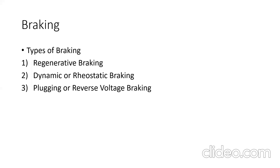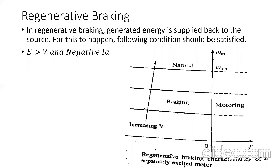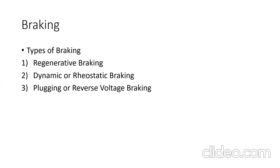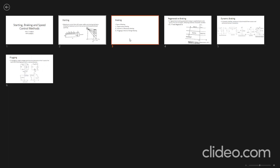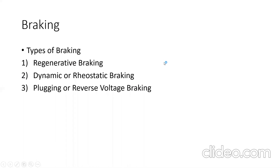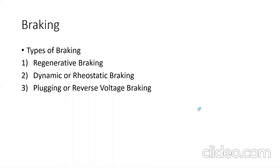The next point is braking. Various braking methods are employed to stop the DC motor. The main types of braking are: first is regenerative braking, second is dynamic or rheostatic braking, and third is plugging or reverse voltage braking. We will see them one by one.